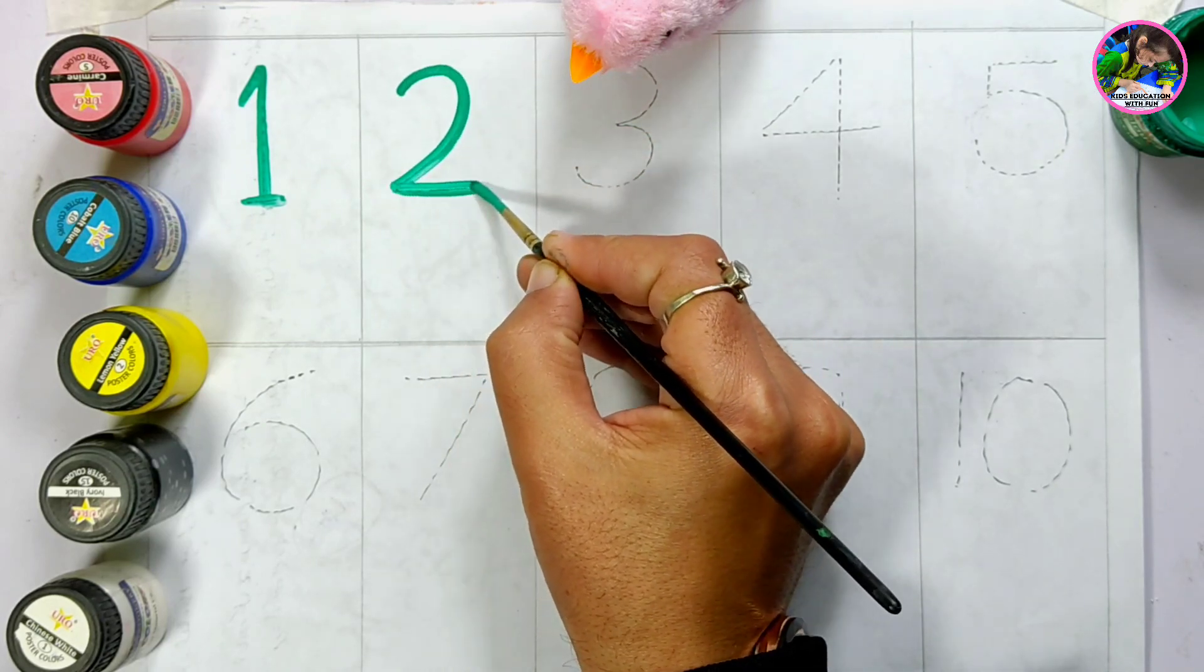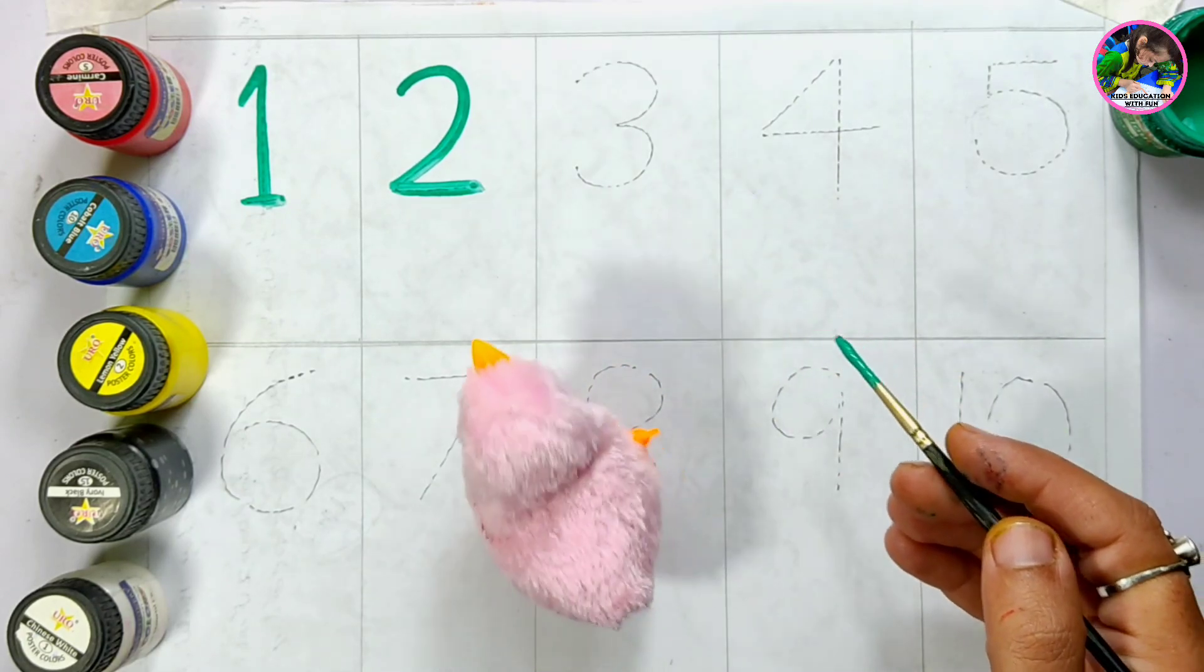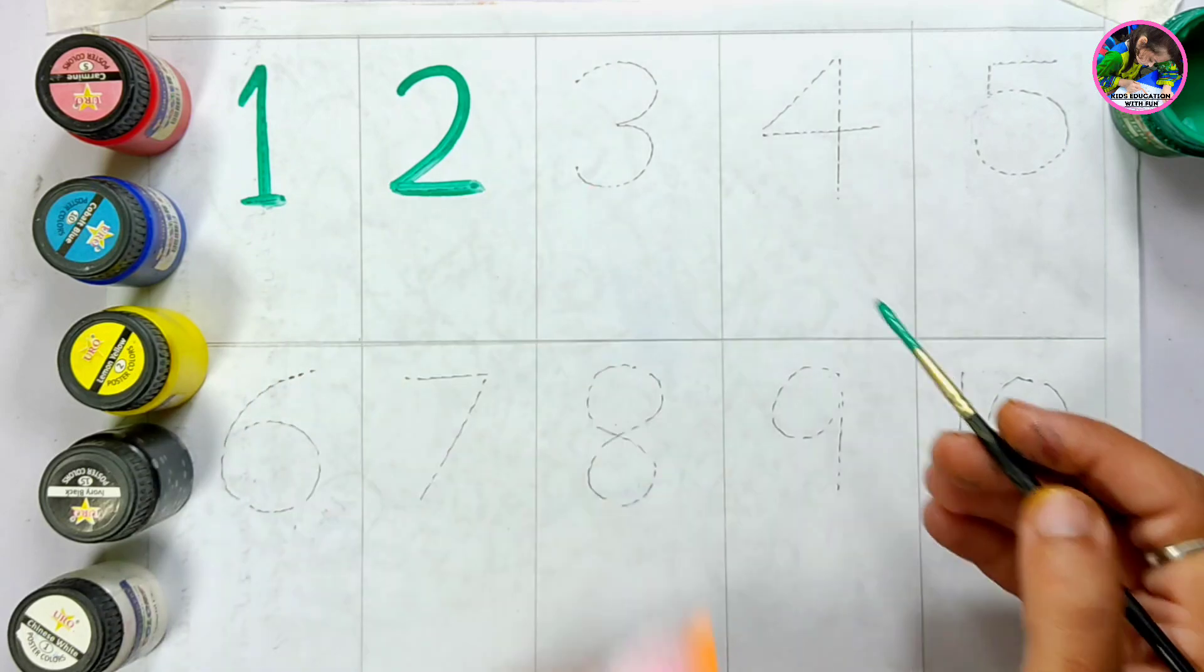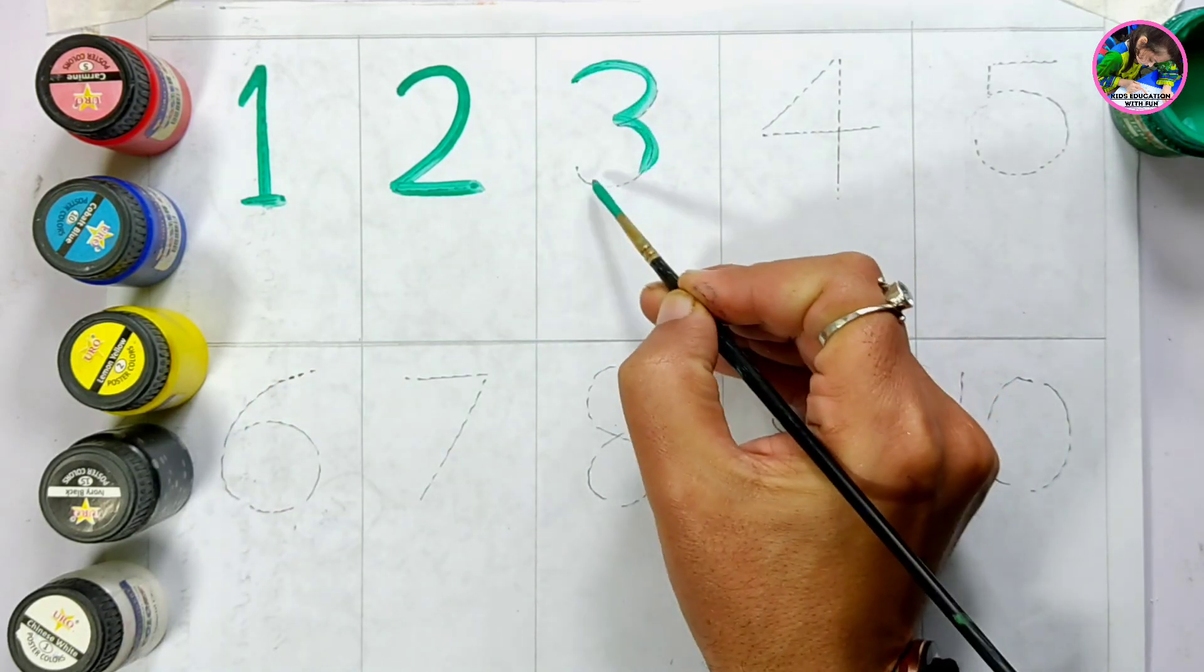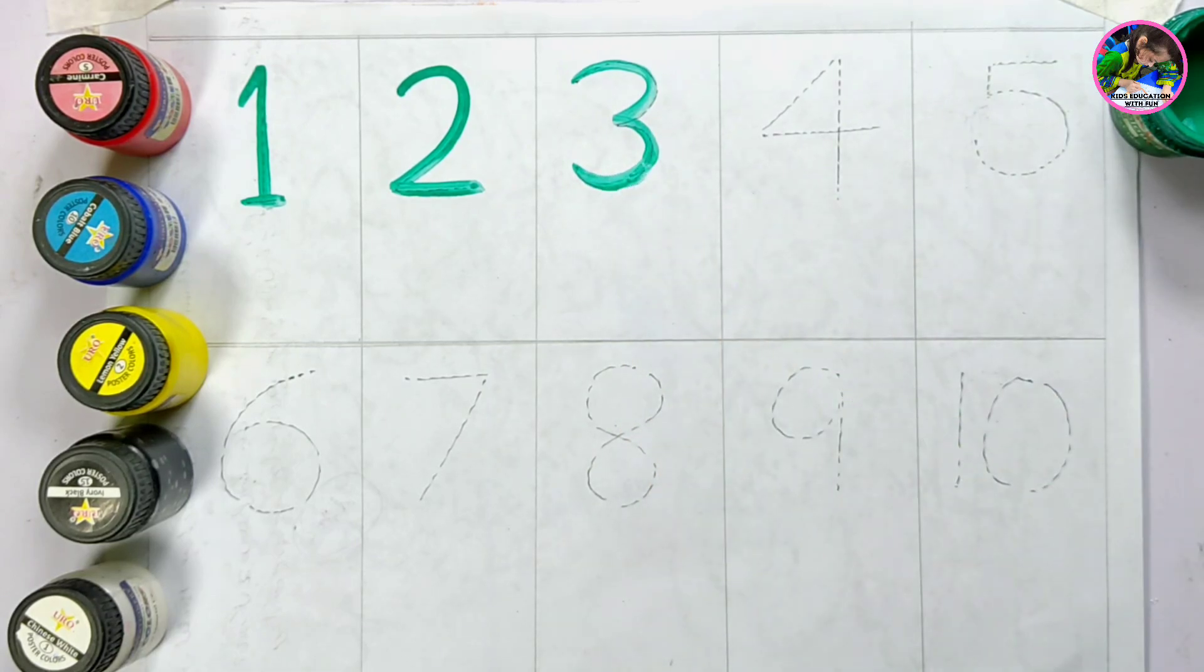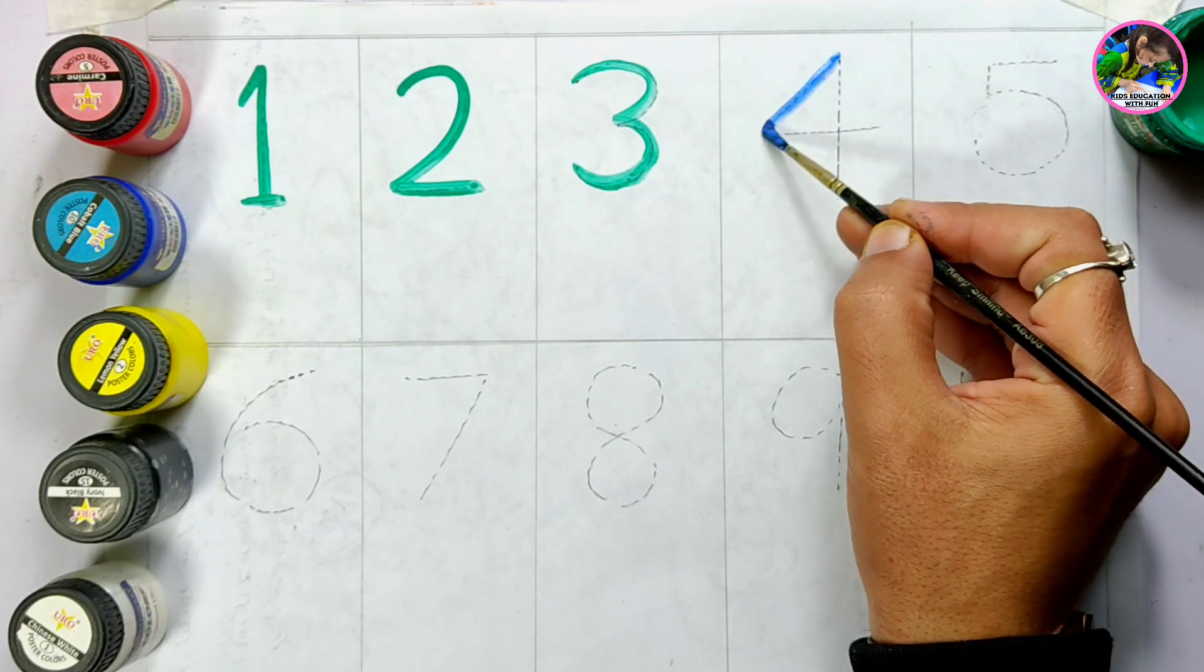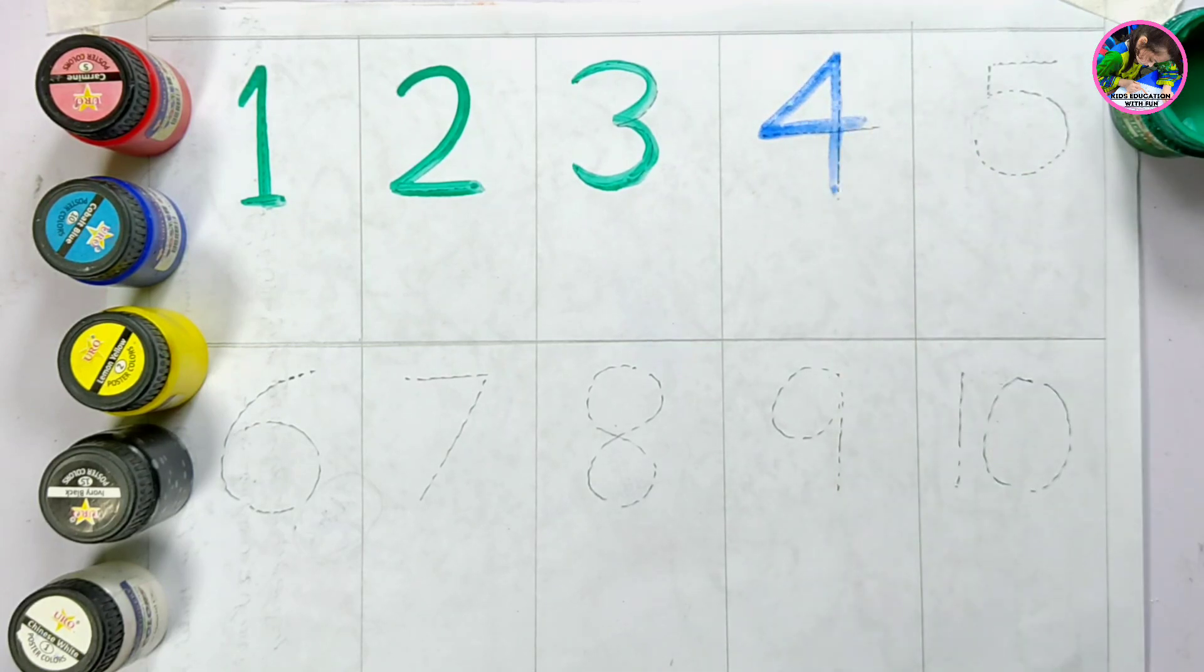Two. What comes after number two is number three. Yes, number three. Next is number four. This is number four.